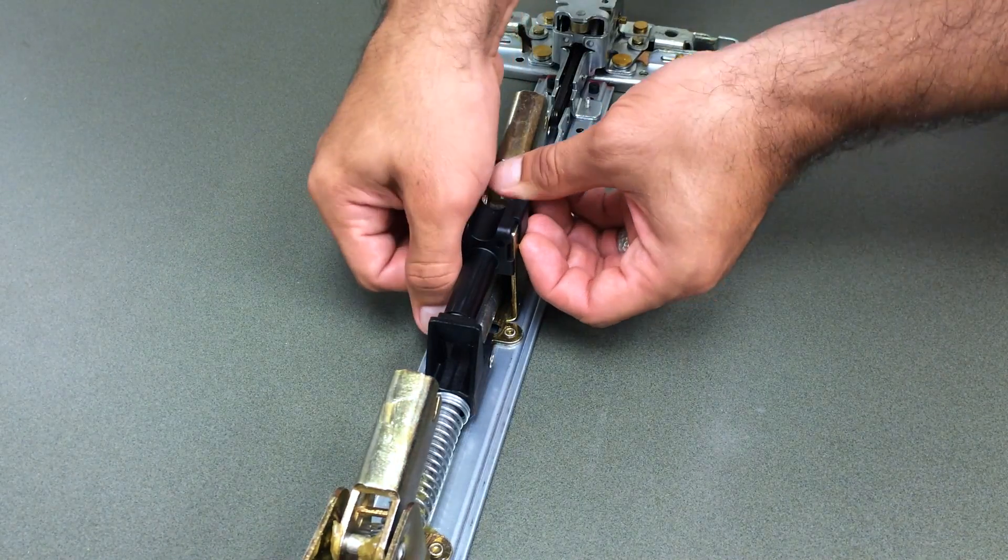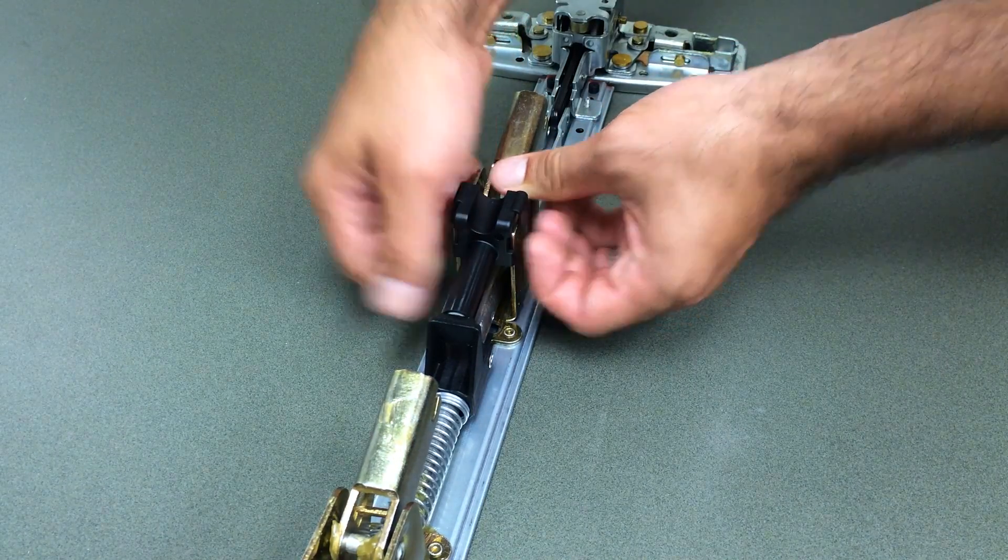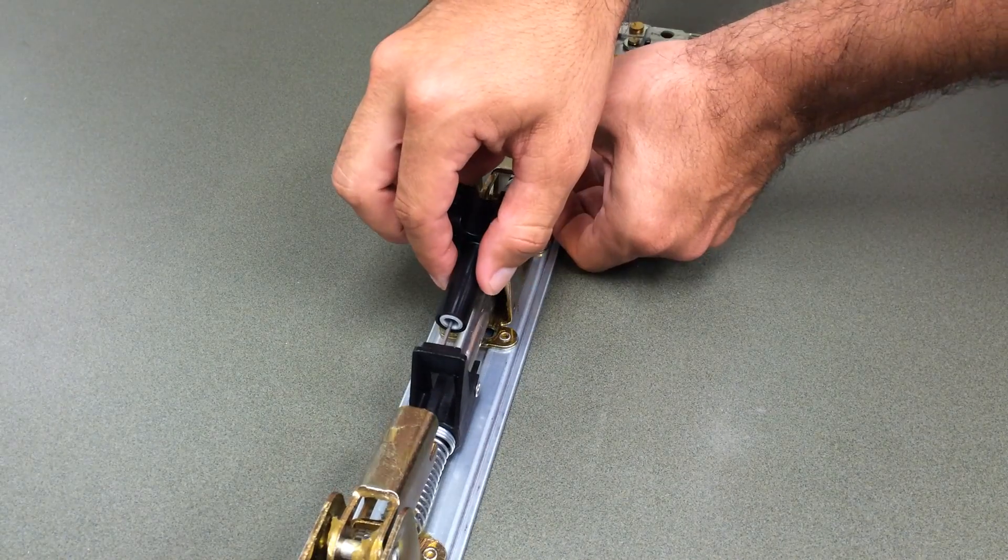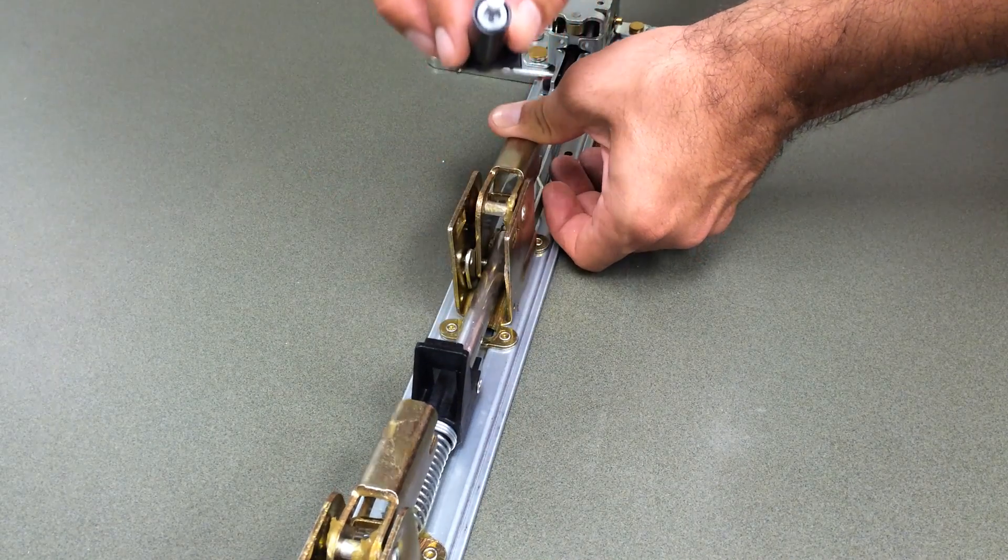Now removing the shock absorber, I like to gently pull outward and unclick the sides. Then I'm going to push down the activating bracket and slide it right out.